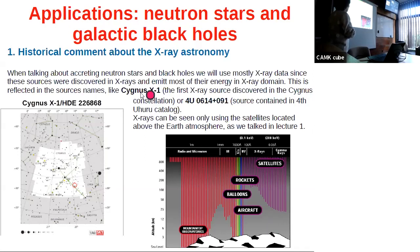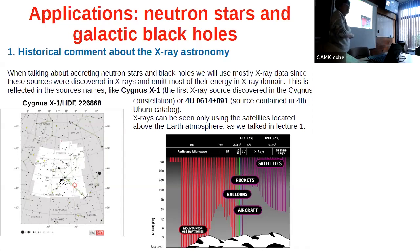In x-rays, the first few sources were named like Scorpius X-1 — the first source detected in the constellation Scorpius. This constellation is seen in our part of the sky; in Poland, Scorpius is well seen. This is the location of Scorpius X-1.